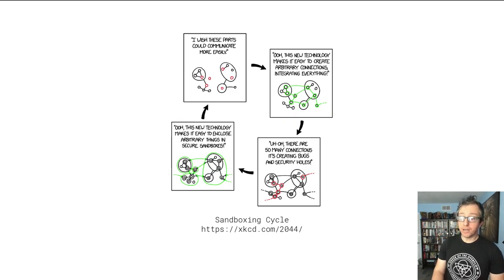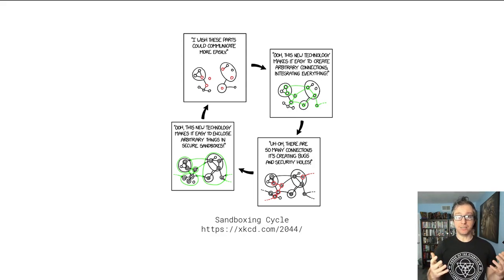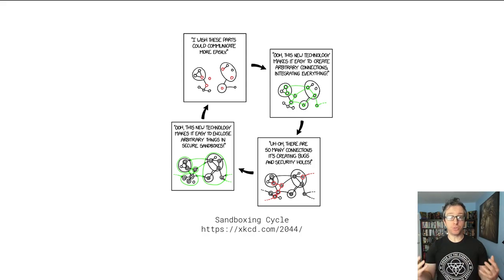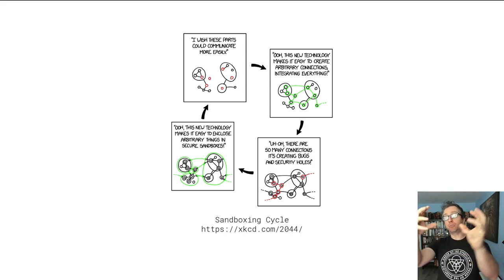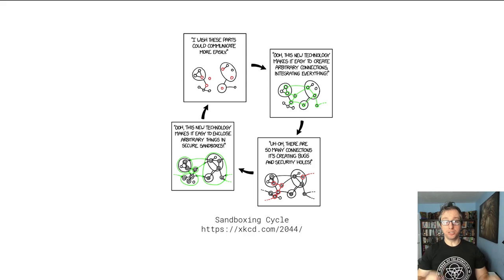What do we mean by this? There's a relevant XKCD, as there is for a lot of things, about the sandboxing cycle. Essentially, as we develop new technology that can be put together in cool ways to enable cool functionality, we start slowly realizing that the way we have put this technology together is not very secure, causes a lot of vulnerabilities. And this happens time and time again with different technologies. And then we end up figuring out other ways to either separate them or to sandbox, essentially to reduce the ability of these vulnerabilities to harm us in these systems.